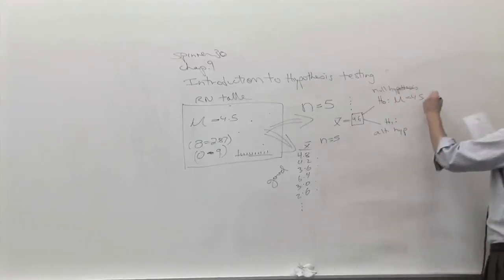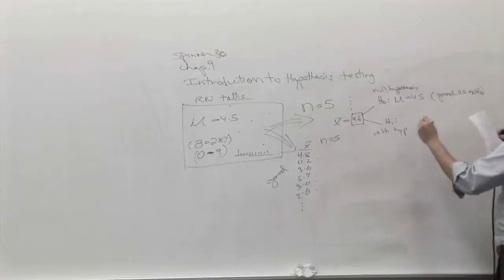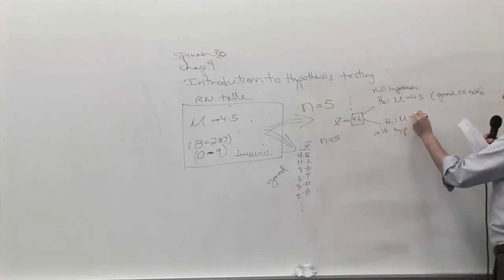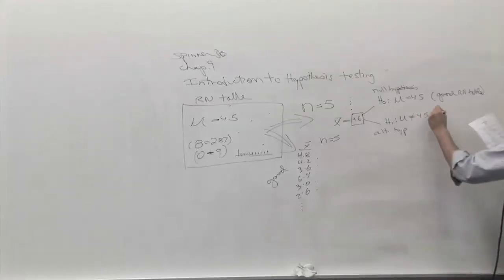And this is claiming the average truly is 4.5. Namely, it's a good table. Let's put that in, a good random number table which has an average of 4.5. And the opposite, the H1 is claiming there's something messed up here, that it's not 4.5. I don't care how much it's messed up. It's just messed up. That's the bad table.